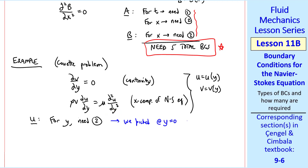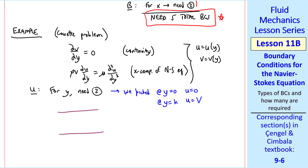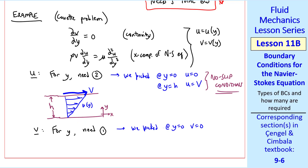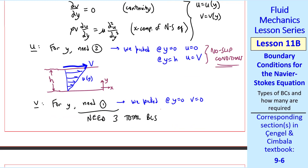Here are the two boundary conditions: at y equals zero, u equals zero, and at y equals h, u equals capital V. Recall we were solving flow between two plates, with the top plate moving at speed V and the bottom plate stationary, where y is measured from the bottom wall. These are both no-slip conditions. Now consider variable v. For y, we need only one boundary condition since v appears in first order. We picked the boundary condition at y equals zero, v equals zero — in other words, there's no flow through the wall. We also wrote v equals zero at y equals h, but that boundary condition was not necessary since we only needed one for v. Adding these up, our answer is that we need three total boundary conditions.